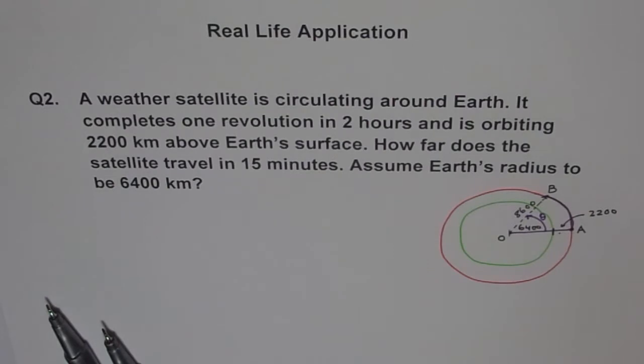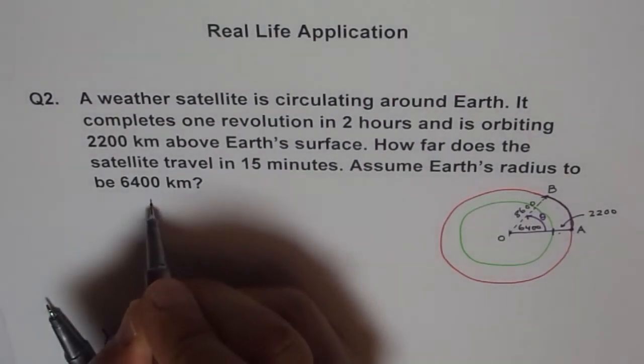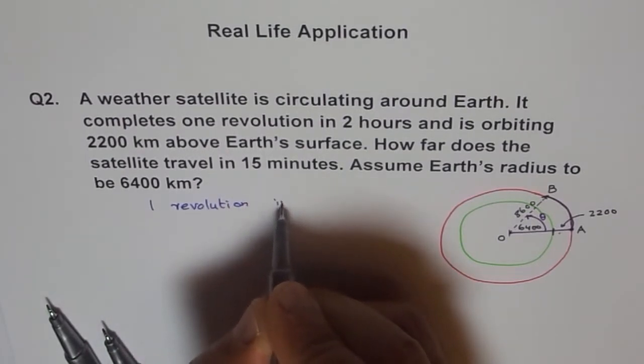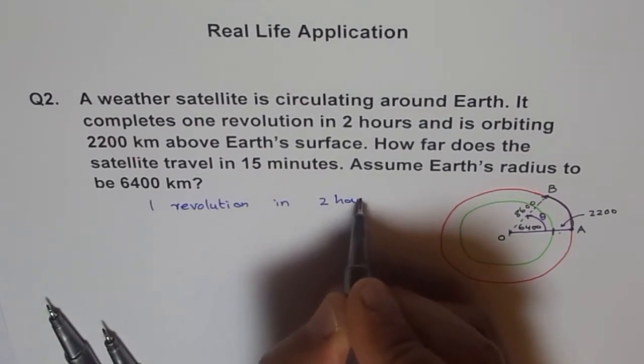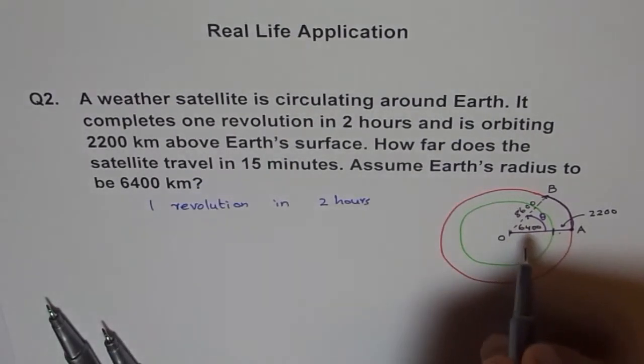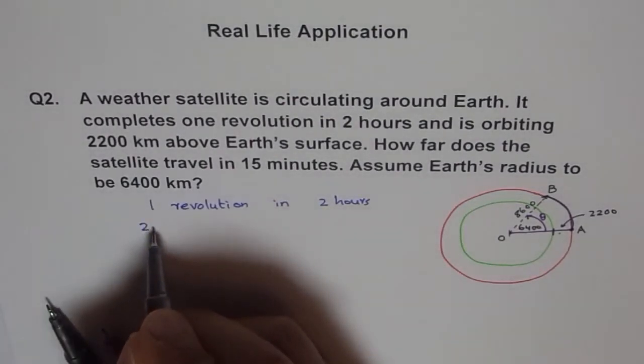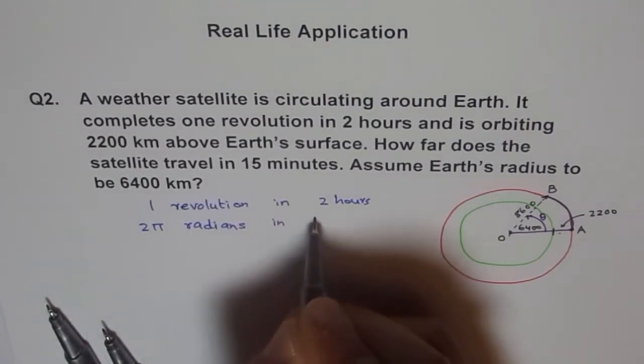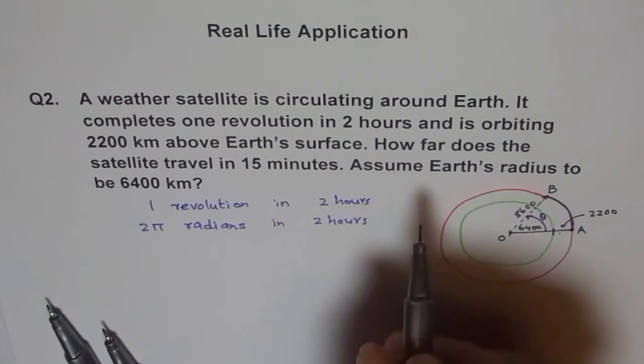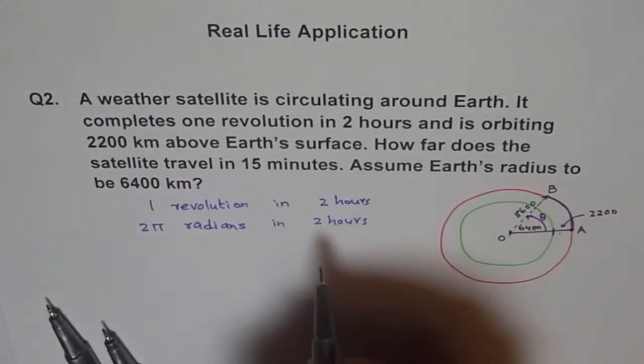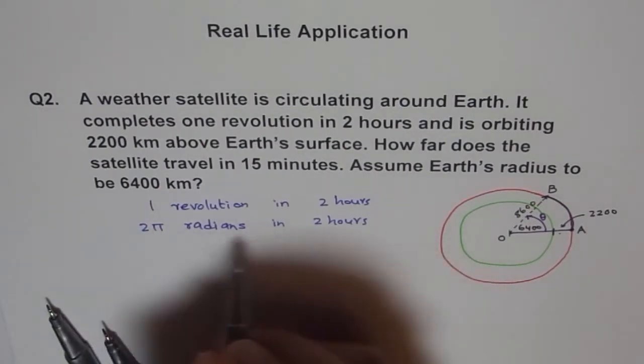So now one revolution in two hours. So when we say one revolution in two hours, right? Now we need to find how far does its satellite travel in 15 minutes. So we can say, well, two pi radians in two hours. So in one hour how much? So we say pi radians.